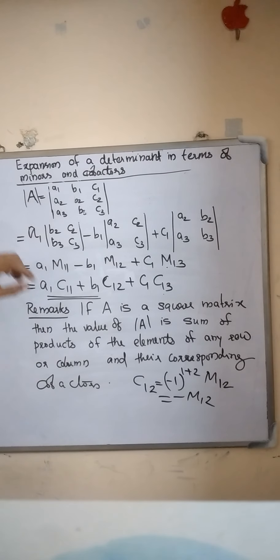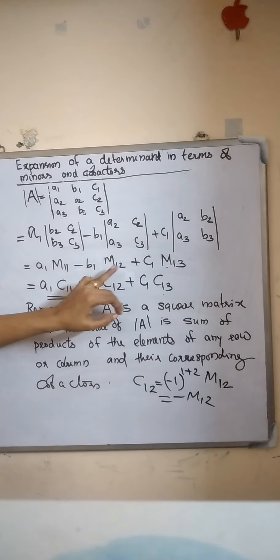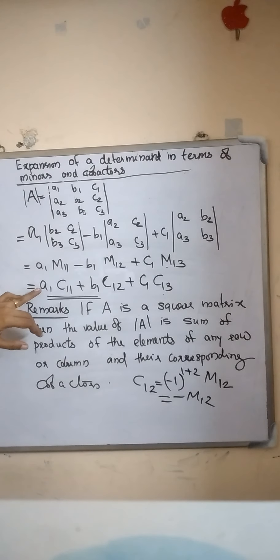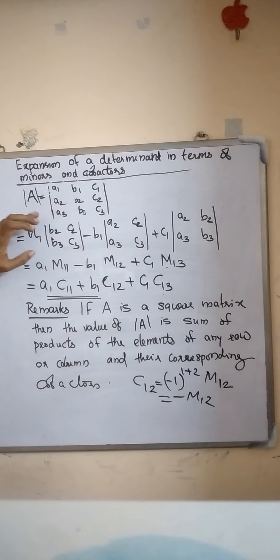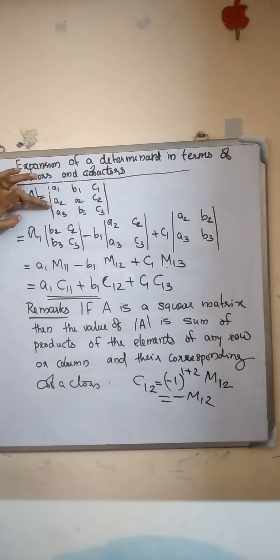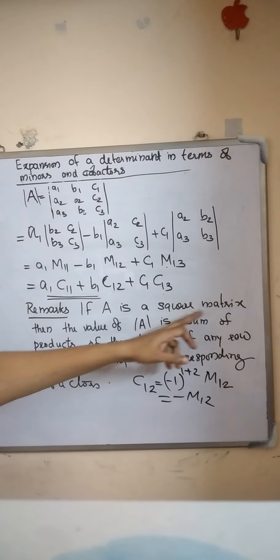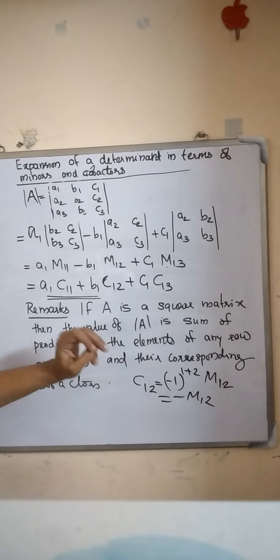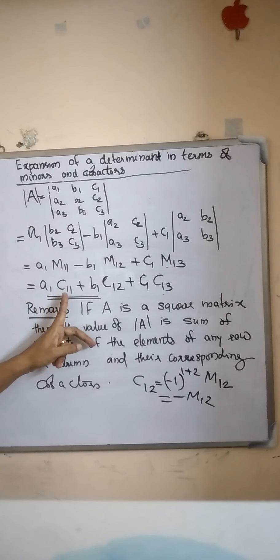So the determinant can be found using minors or cofactors. If you know the minors of elements in a row, you can find the determinant as A1 into minor minus B1 into minor plus C1 into minor. Or using cofactors: A1 C11 plus B1 C12 plus C1 C13. If expanded through the second row, the determinant equals A2 C21 plus B2 C22 plus C2 C23. In general, if A is a square matrix, the value of the determinant is the sum of the products of the elements of any row and their corresponding cofactors.